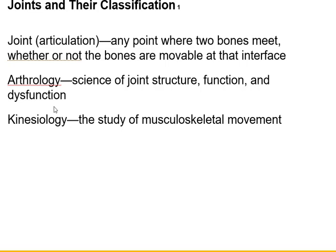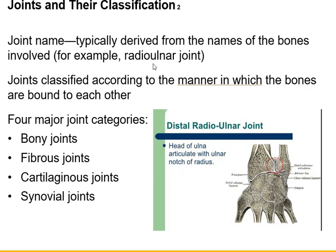Arthrology is the science of joint structure, function, and dysfunction. Kinesiology is the study of the muscles working with the skeleton and how you have movement — so this would be the study of diarthrosis or synovial joints. Most joints are named after the bones that are articulating — for example, the radio-ulnar joint is where the radius and the ulna join together.